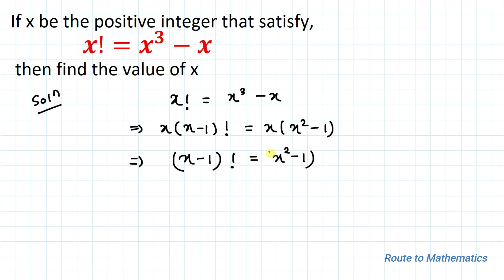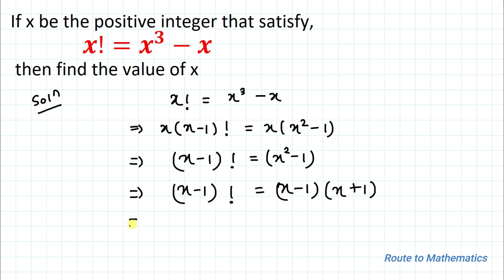So (x minus 1) factorial equals x squared minus 1. Applying the algebraic identity for a squared minus b squared, we get (x minus 1) factorial equals (x minus 1) multiplied with (x plus 1). We can then expand (x minus 1) factorial as (x minus 1) multiplied with (x minus 2) factorial, giving (x minus 2) factorial equals (x plus 1).